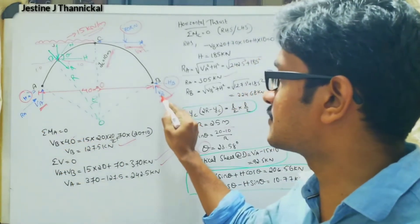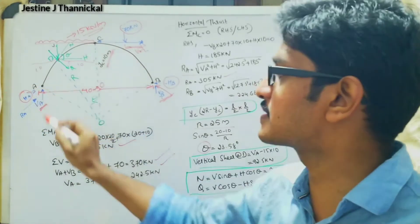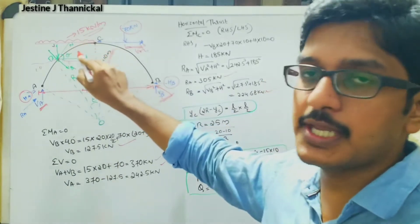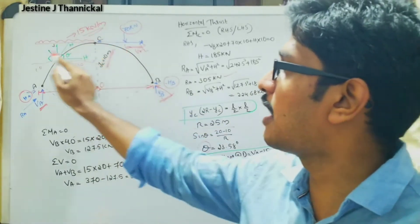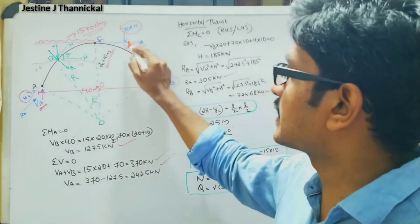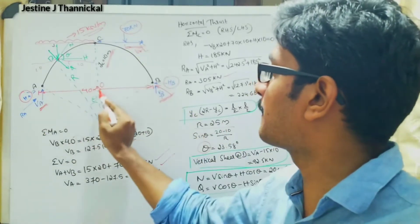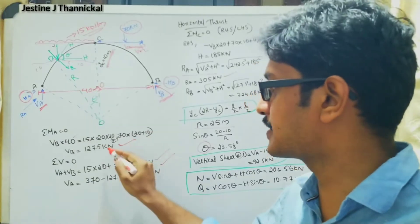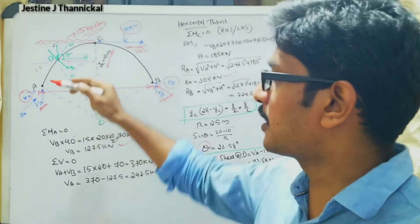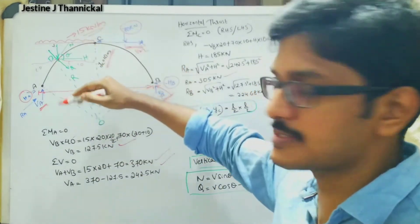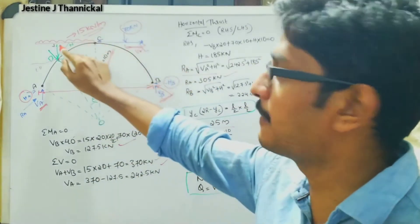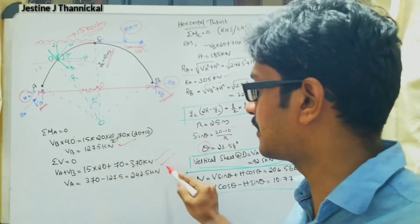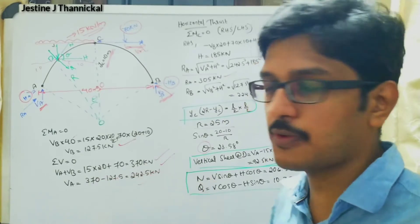Considering VB acting in the anti-clockwise direction: VB multiplied by 40 equals 15 multiplied by 20 multiplied by 10 (the half distance, 20 divided by 2) plus 70 multiplied by (20 plus 10). Solving this gives VB equals 127.5 kilo Newton. For vertical equilibrium, VA plus VB equals 15 multiplied by 20 plus 70, which gives 370 kilo Newton total.